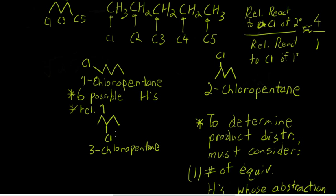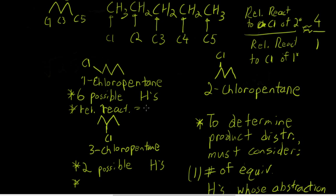Now let's look at 3-chloropentane. This results from chlorination at carbon 3. There are two possible hydrogens at carbon 3 that could be abstracted, and these are secondary hydrogens, so their relative reactivity is approximately 4.